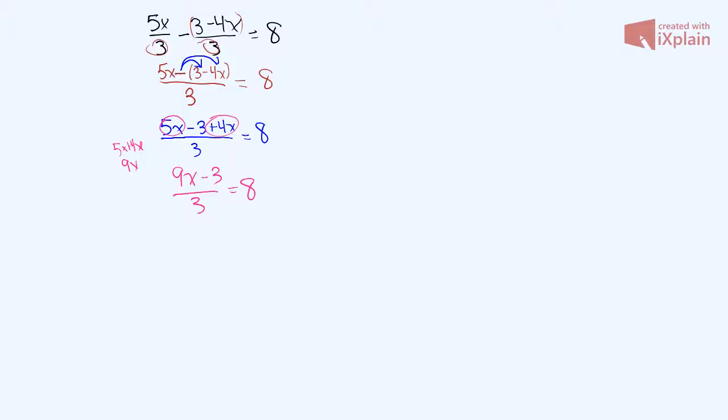And now that we have the numerator simplified, to get rid of this, since we're dividing by 3, we have to multiply both sides by 3. And this just cancels that out.